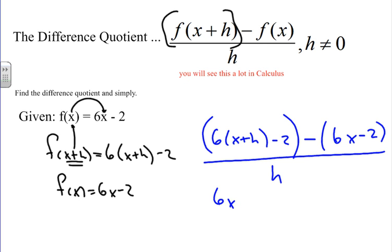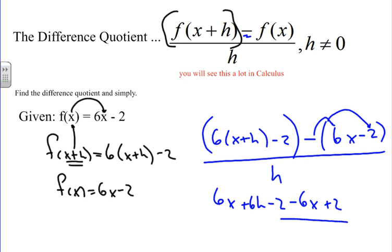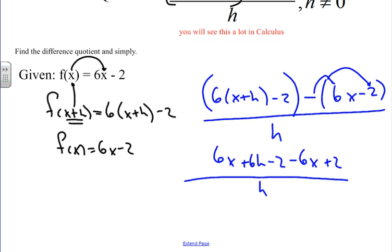We have 6x plus 6h minus 2. Remember, distribute the negative through because we're subtracting f of x — so it's the opposite of that expression. We get negative 6x plus 2, all over h. The 6x terms cancel and the constant terms cancel, and we're left with 6h over h. And 6 — box it in — is our simplified answer.